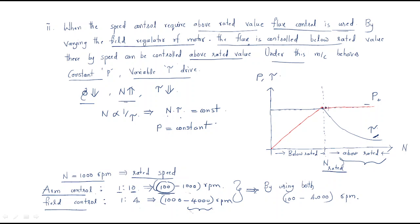By using both methods combined, the speed control is done from 100 rpm to 4000 rpm. If the rated speed is 1000 rpm, the speed can be varied from 100 rpm to 4000 rpm — a wide range of speed control is possible by this method. That is why the Ward Leonard speed control method is very important: it controls speed both below and above the rated value.